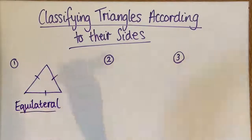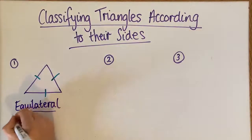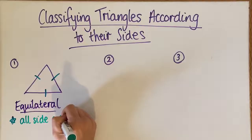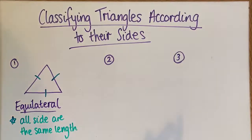Equilateral means that every single side is the same length. You can see here that I've marked these as being the same. So all sides are the same length, no side is any longer than the other.